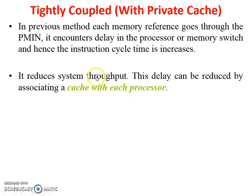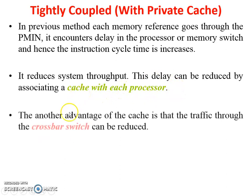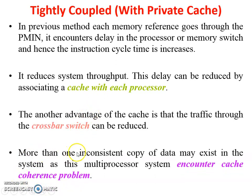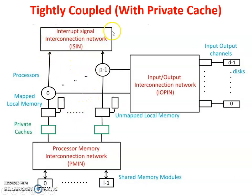This reduces system throughput issues, so tightly coupled with private cache achieves higher throughput compared to tightly coupled without private cache. This delay can be reduced by associating a cache with each processor — each processor is connected through its private cache. Another advantage is that traffic through the crossbar switch can be reduced. However, more than one consistent copy of data may exist in the system, so this multiprocessor system encounters a cache coherence problem, which is solved by other methods.